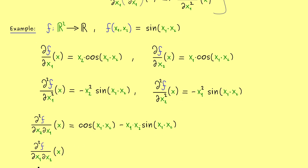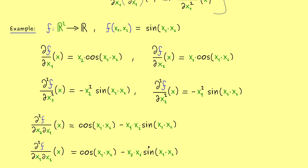Now what happens when we do it in the other order — taking df/dx2 and differentiating with respect to x1? The product rule comes in again: the first term is cosine of x1·x2, and the second term gives minus sine with inner derivative x2 in front. The result is exactly the same as before. For this function, the order of the mixed second-order partial derivatives did not matter. This is a result from a famous theorem known under many different names, which will be the topic of the next video. Let's meet there — have a nice day!